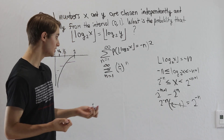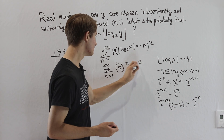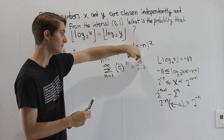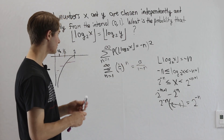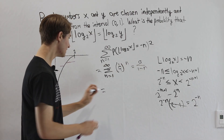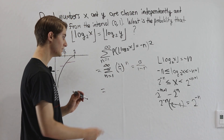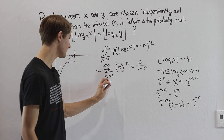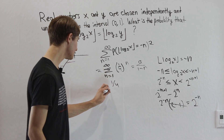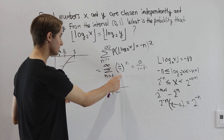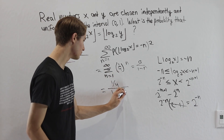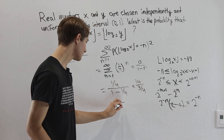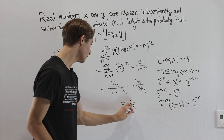The sum of a geometric series is a over 1 minus r, where a is the first term and r is the common ratio. Here the first term is one quarter (plugging in n equals 1) and the common ratio is also one quarter. So we get one quarter divided by (1 minus one quarter), which is one quarter over three quarters, giving a final result of one third.